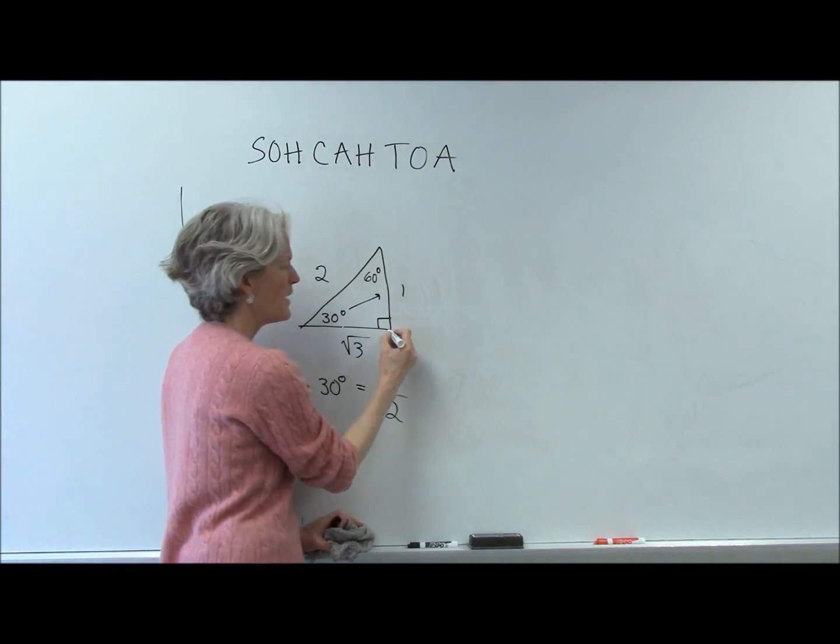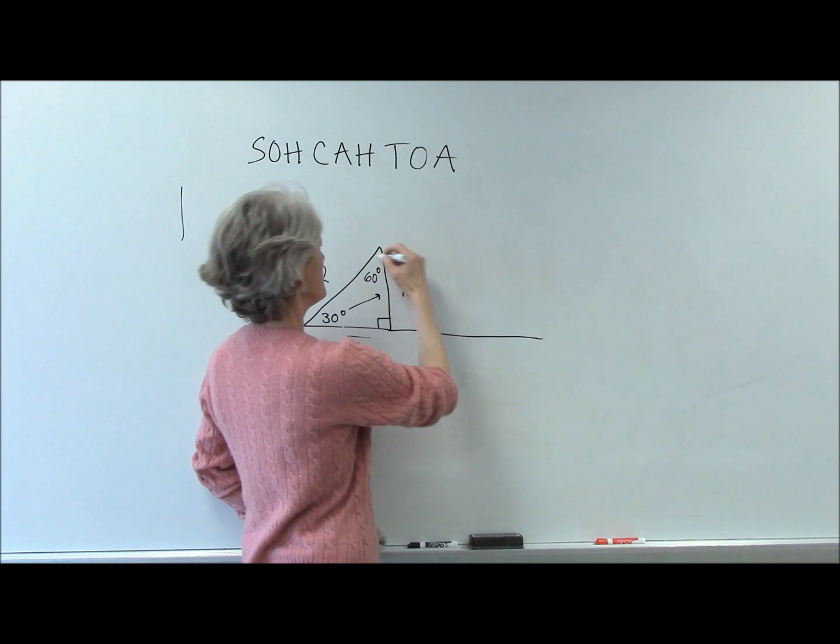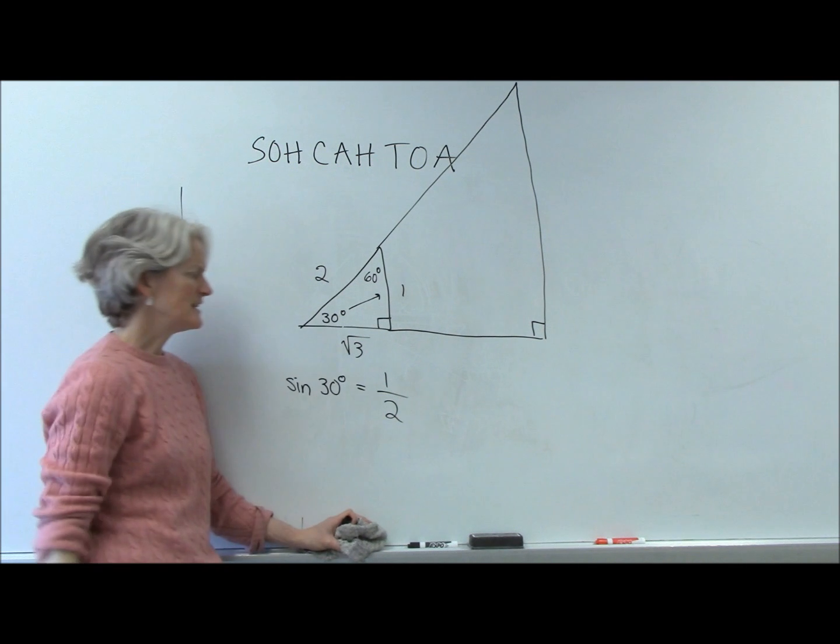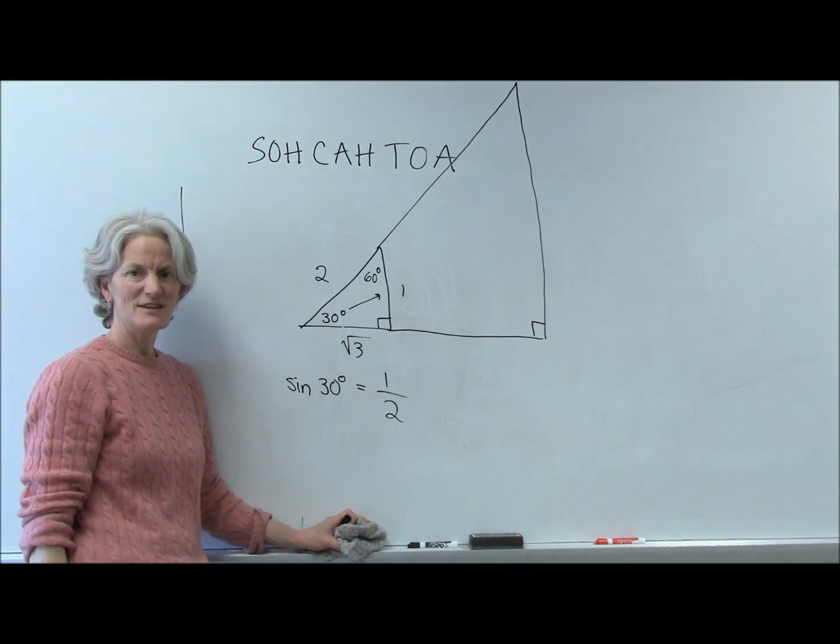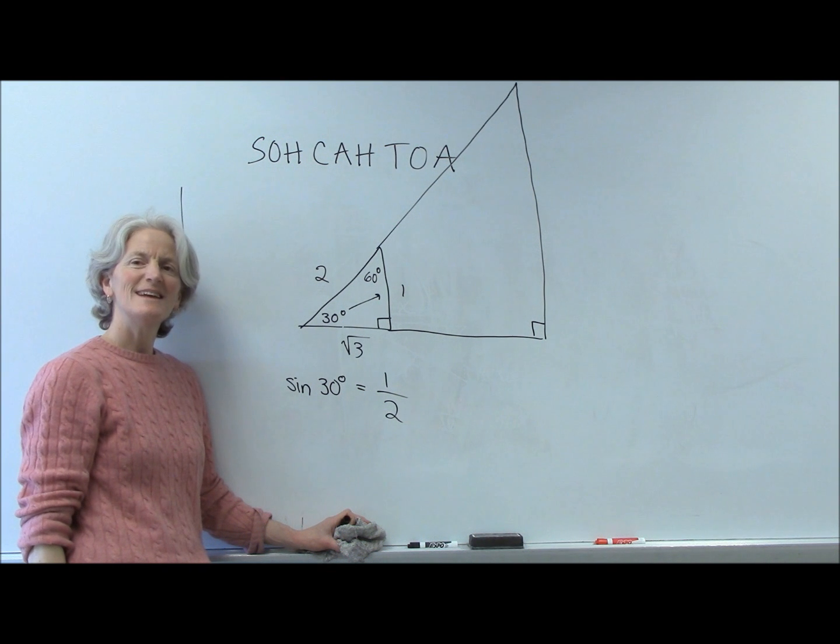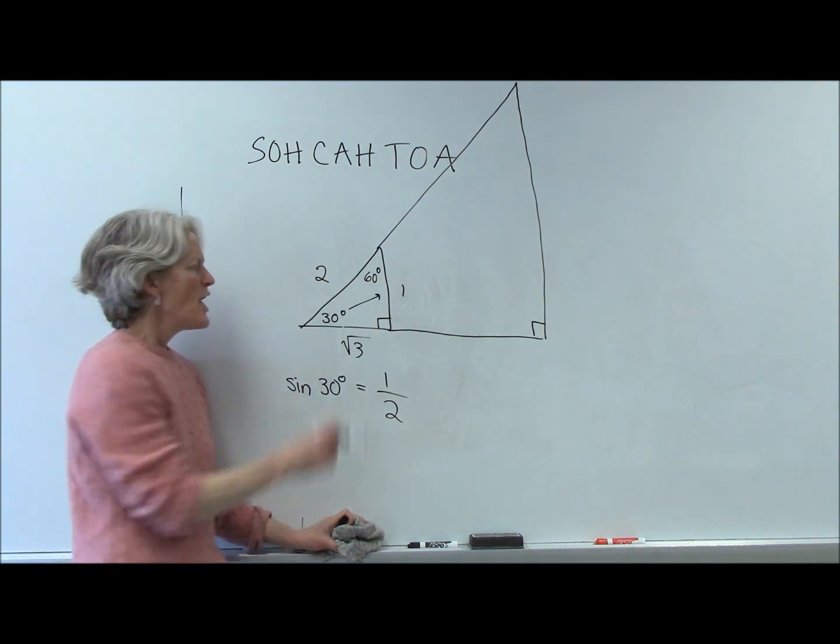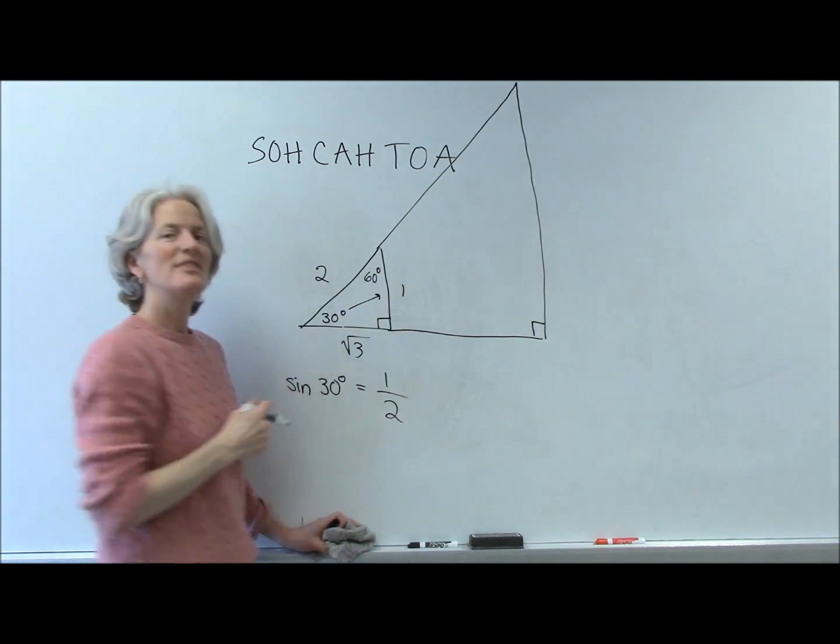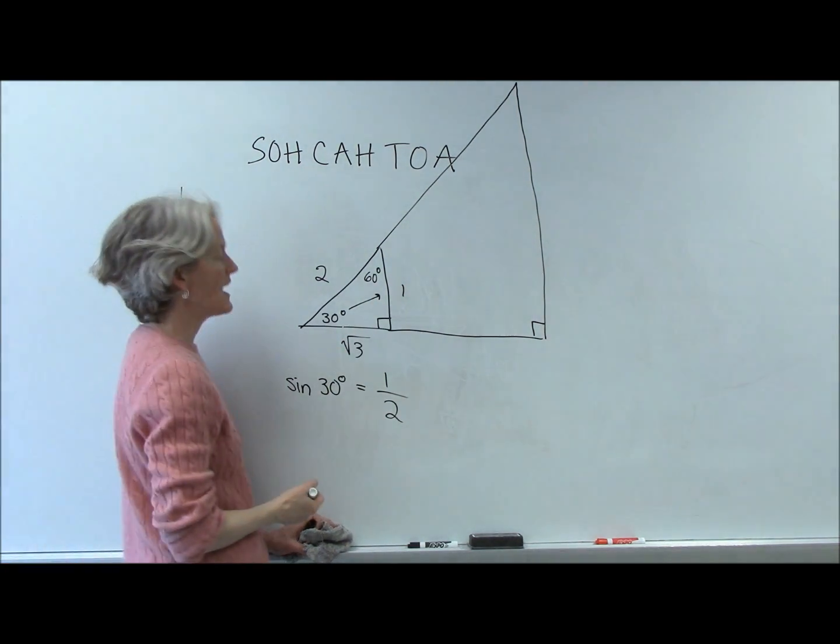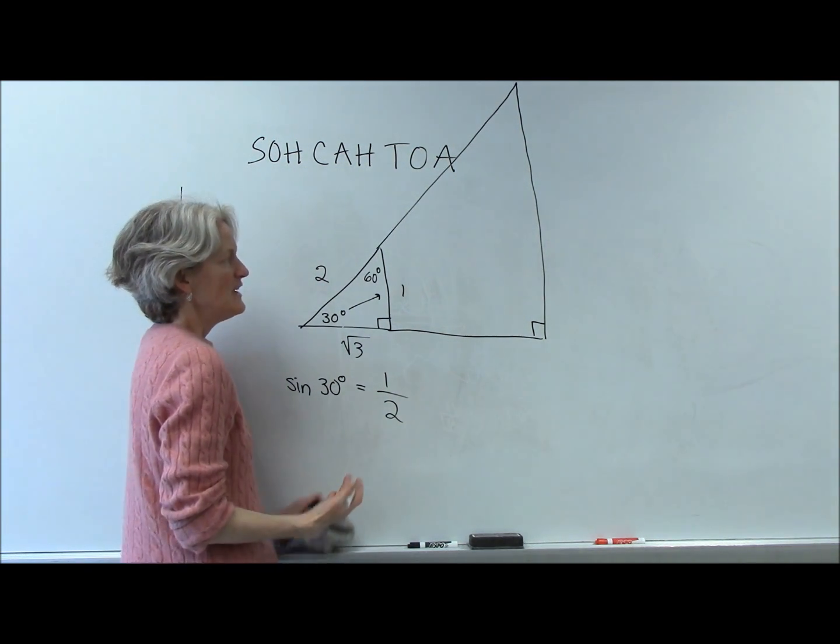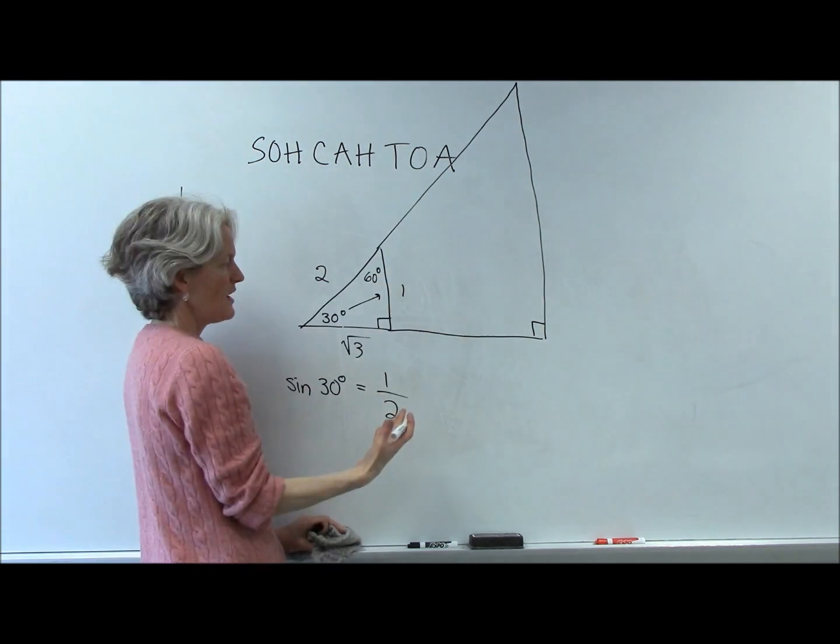But wait a minute, what if I had a 30 degree angle, but my triangle was a lot bigger? Well, clearly that's going to be different, right? Doesn't it look like it'd be different? Whoa, that's a big triangle. That's a big angle didn't change. The angle didn't change, the sides changed, but the relationship between the sides will remain the same, and that's the whole cool thing that was discovered, is that these are similar triangles.